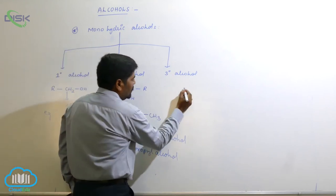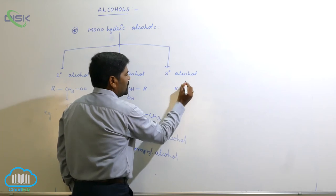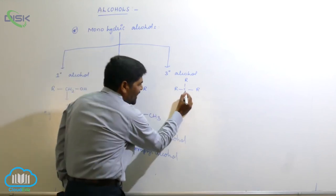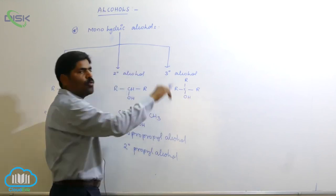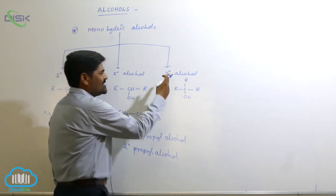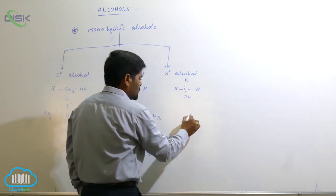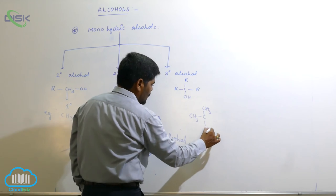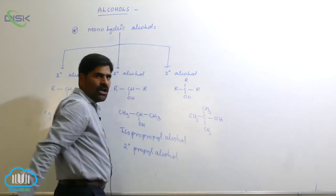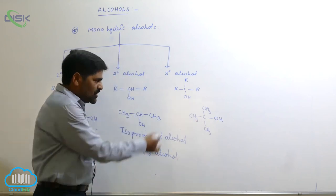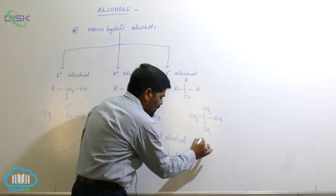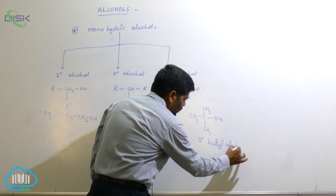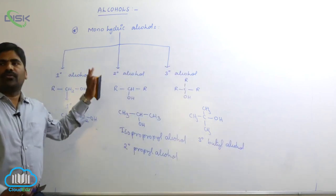For tertiary alcohol, the central carbon is connected to three carbon atoms, known as a three-degree carbon. When this three-degree carbon is connected to an OH group, it is known as tertiary alcohol. The example for tertiary alcohol is tertiary butyl alcohol. So this covers the classification of monohydric alcohols.